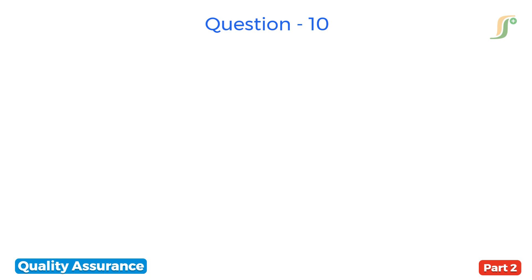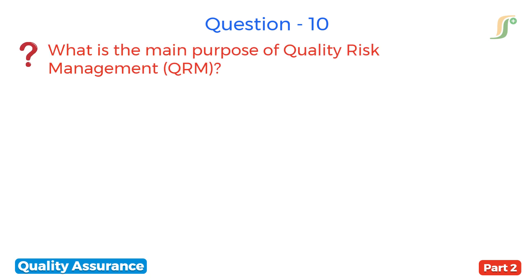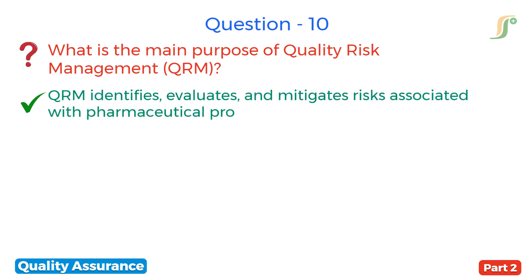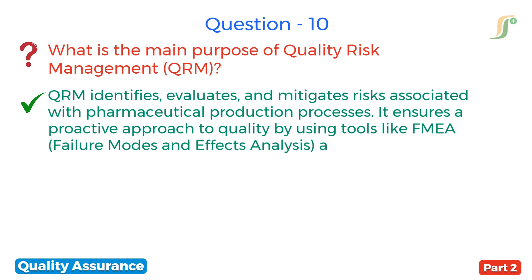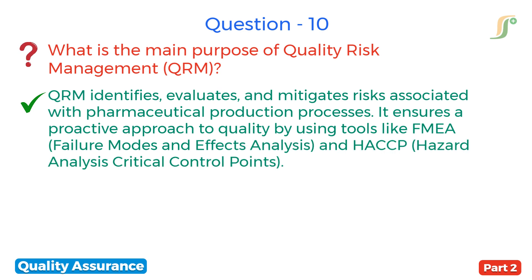The tenth question is: what is the main purpose of quality risk management? QRM identifies, evaluates and mitigates risks associated with pharmaceutical production processes. It ensures a proactive approach to quality by using tools like FMEA — failure modes and effects analysis — and HACCP — hazard analysis critical control points.